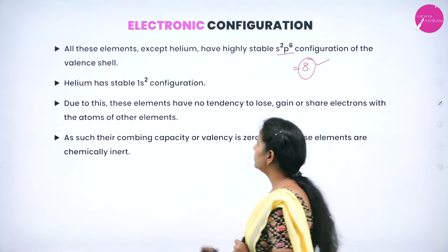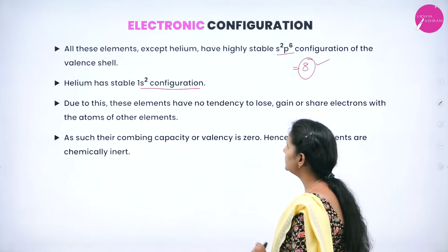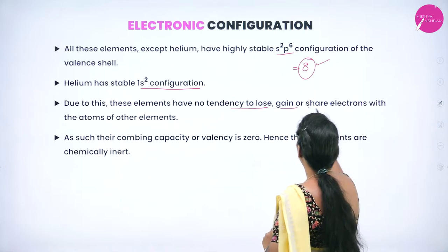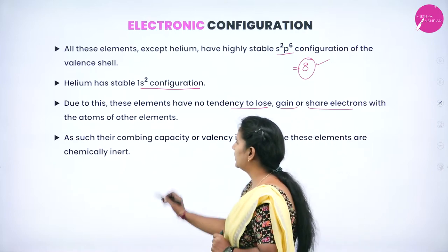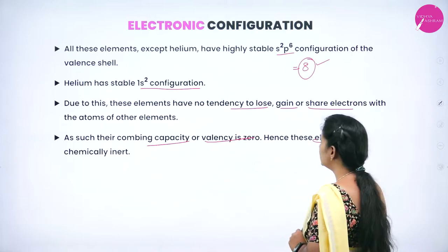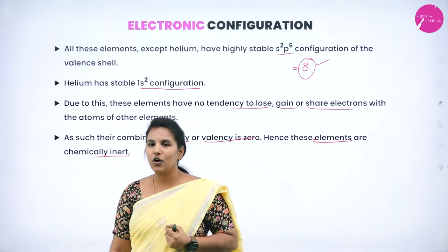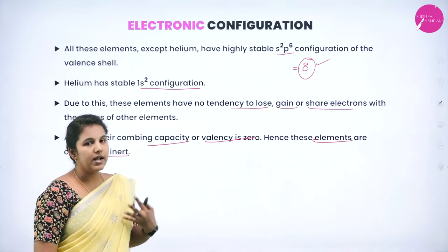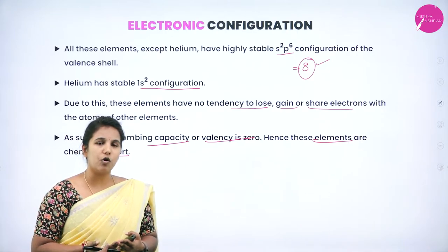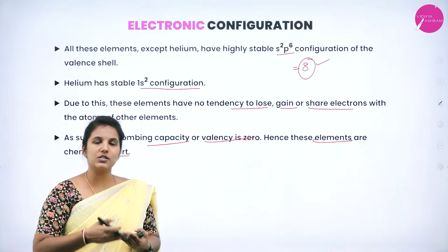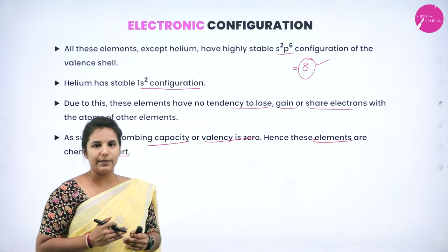Helium shows 1s2 configuration, which is also stable. Due to this, these elements have no tendency to lose, gain, or share electrons with atoms of other elements. Their combining capacity and covalency are zero; hence these elements are chemically inert. Their valence shell has completely filled 8 electrons, so they are called zero group elements or inert gas elements.